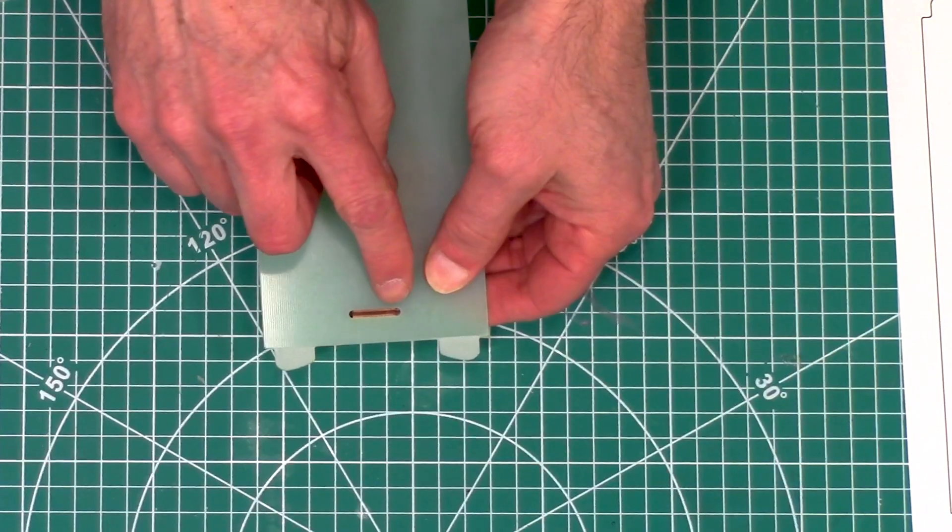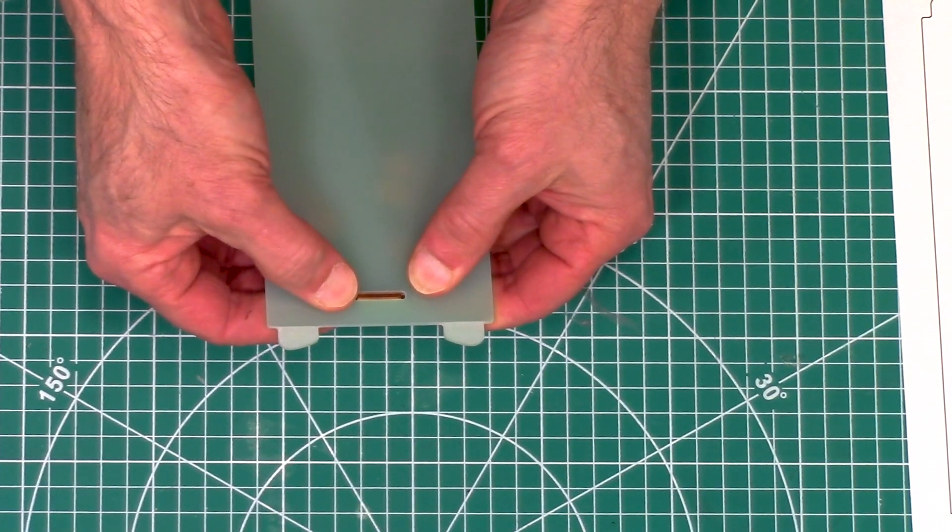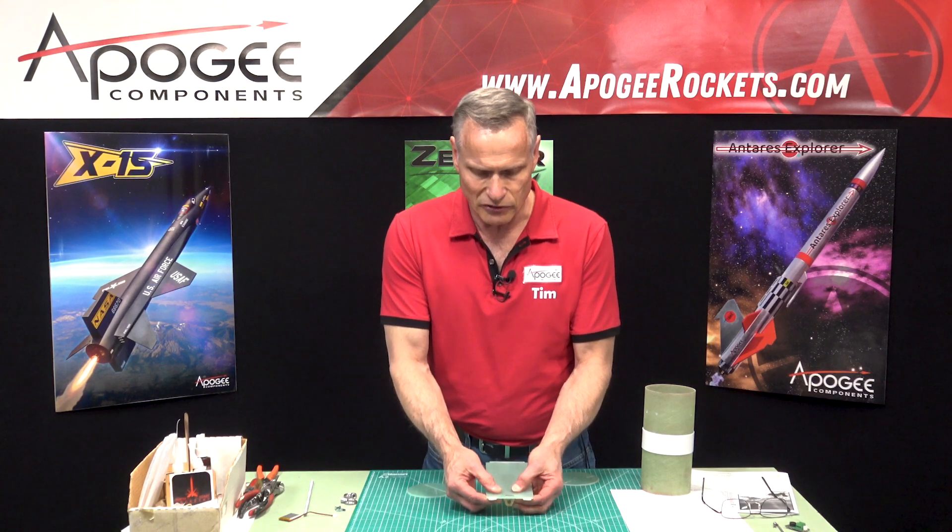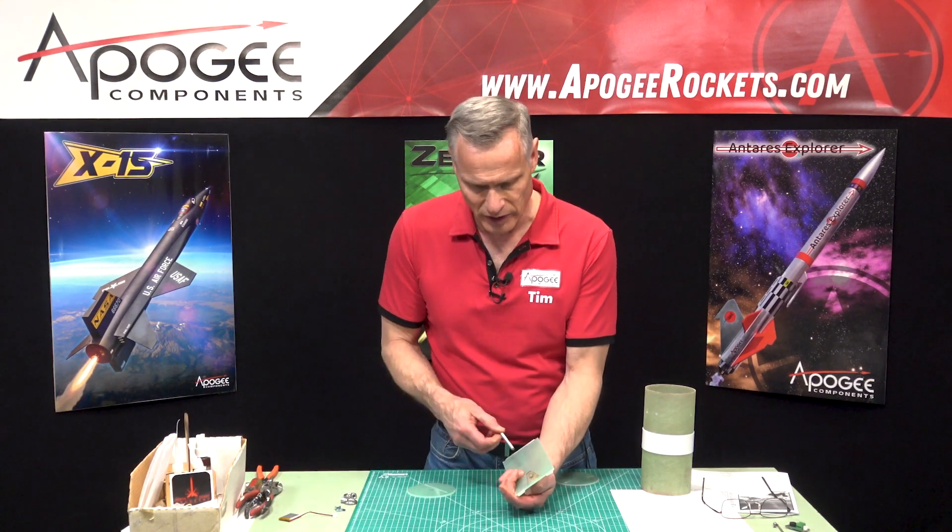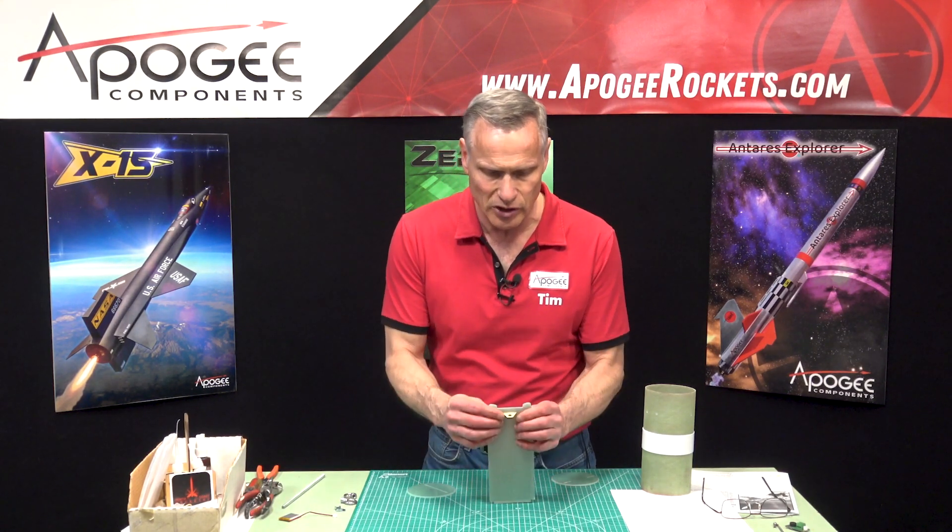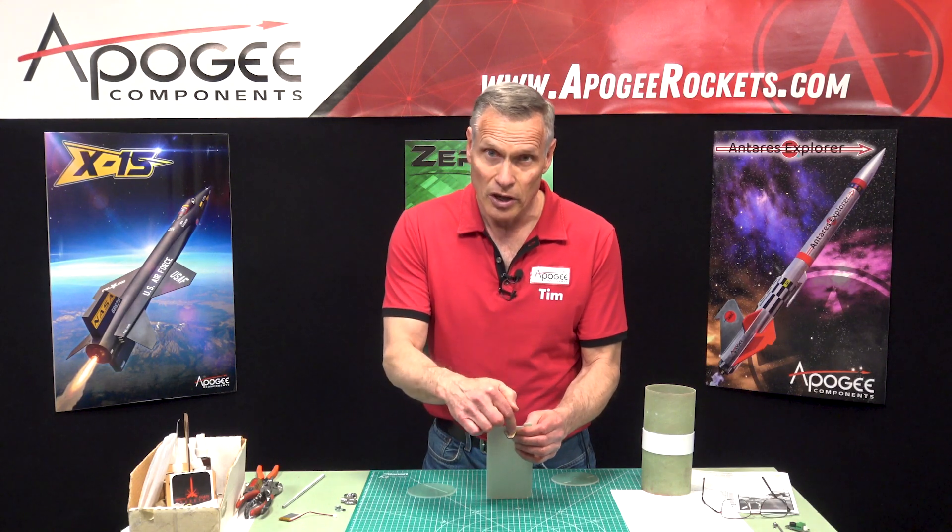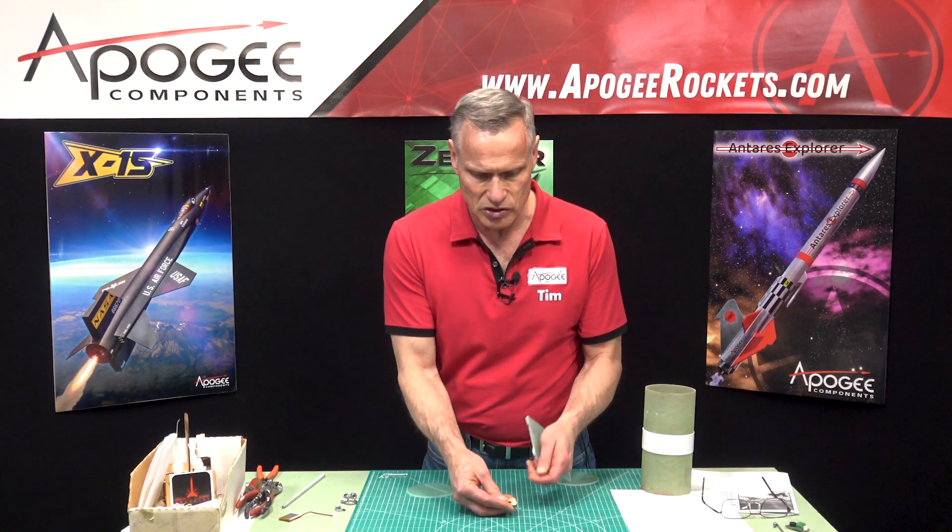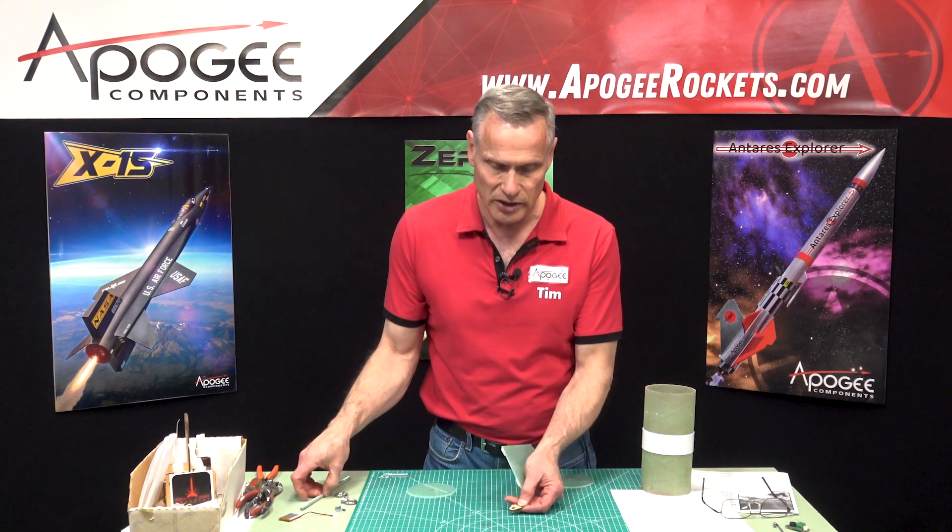When you glue it in, kind of flip it over and make sure that it's centered right in the middle, because if it's off to one side then it's not gonna line up perfectly. You can always open up that hole a little bit in this piece just to make sure that the all-thread does go through.